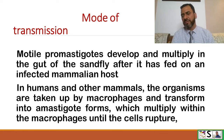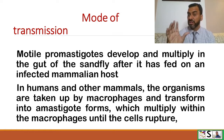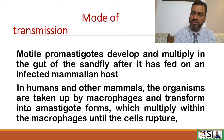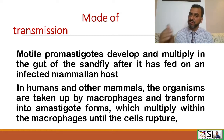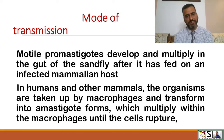In humans or other mammals, the organisms are taken up by the macrophages. When the sand fly again bites a healthy person, the pathogenic organism enters into the macrophages, and there it multiplies. The stage which develops in the human body is the Amastigote form, which multiplies inside the macrophages until the cell ruptures.